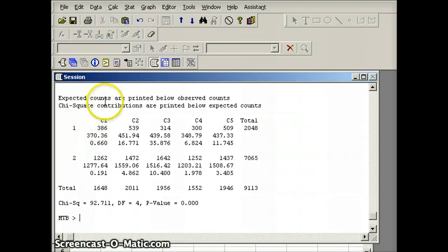It says expected counts are printed below observed counts. Observed counts on top, expected in the middle. And the numbers on the bottom are (Observed - Expected)² divided by Expected. Now, let us notice a couple things.